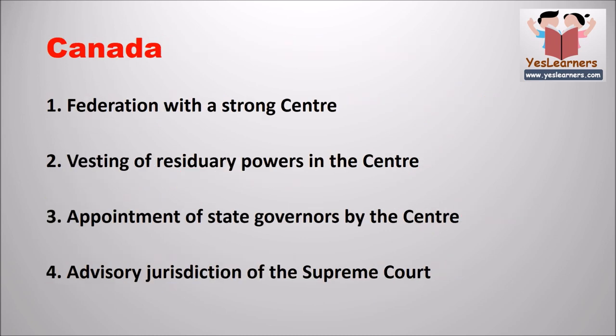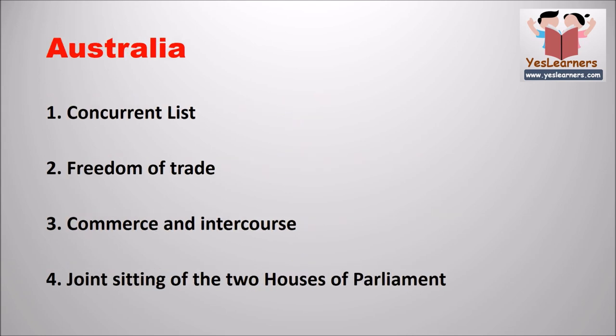The borrowed features from the Canadian Constitution are Federation with a Strong Centre, Vesting of Residuary Powers in the Centre, Appointment of State Governors by the Centre, and Advisory Jurisdiction of the Supreme Court.